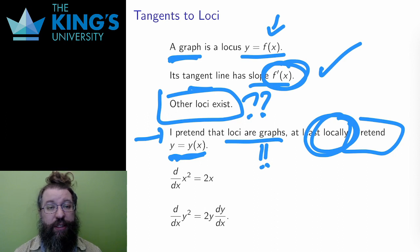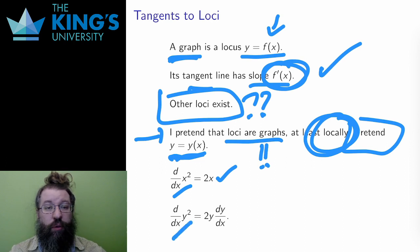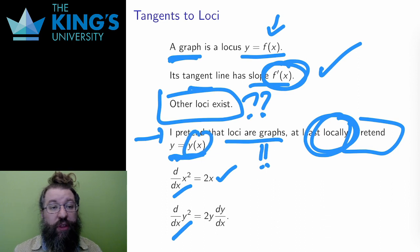And this pretense lets me differentiate in the independent variable x. For any expression in x, this is just a normal derivative. However, there are also expressions in y in a locus. I am pretending that y is a function of x, so these have to become chain rule derivatives.